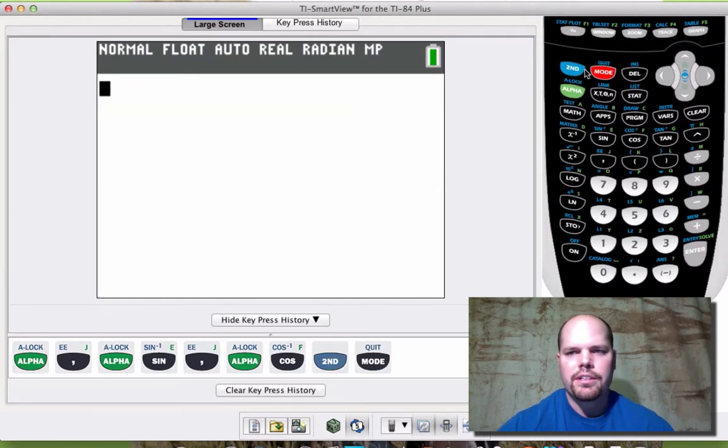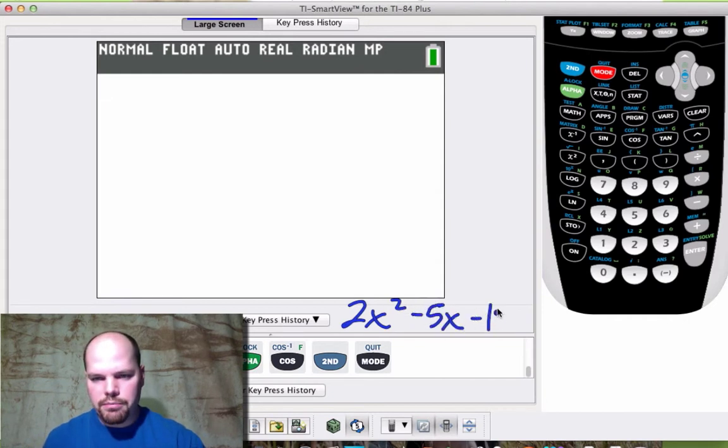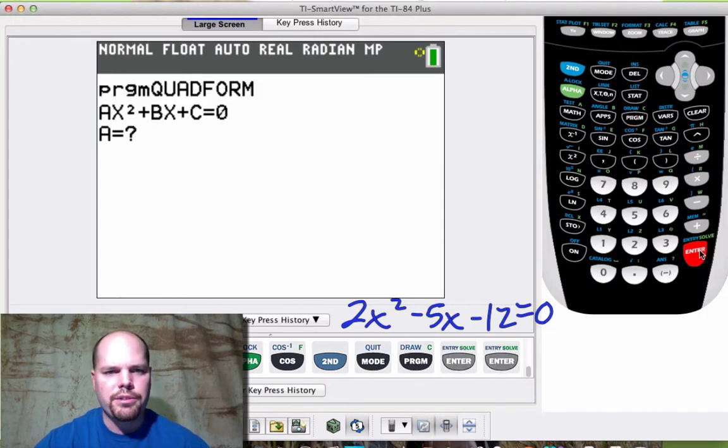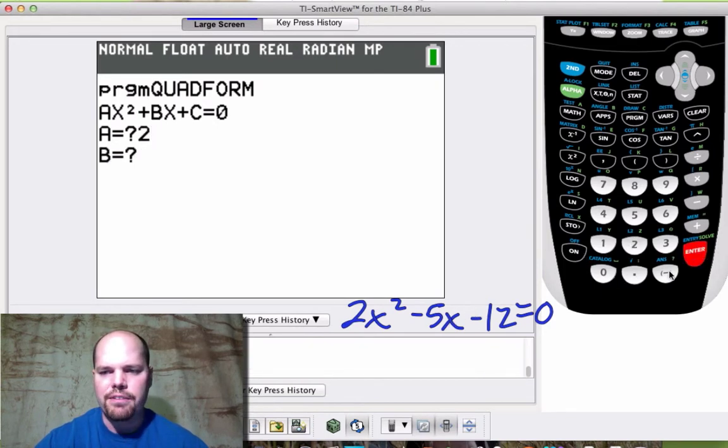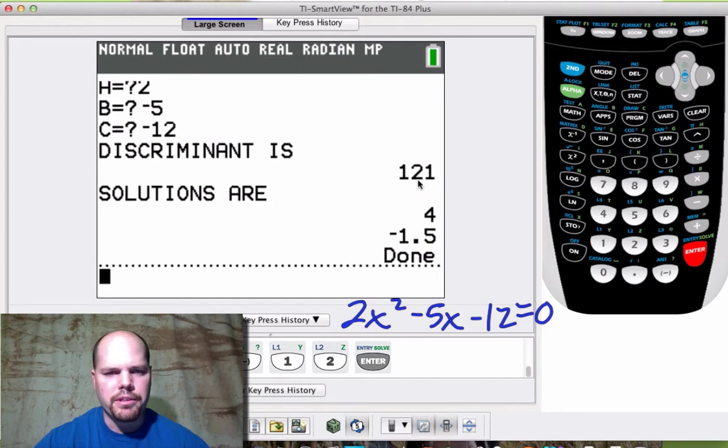Let's try it. So quit out. Second mode, quit out of there. And let's solve a quadratic of the form 2x² - 5x - 12 = 0. Let's use our quadratic program to solve this. So press program. Let's execute quadratic formula. Press enter. Now notice this little reminder here, ax² + bx + c = 0. Our equation is equal to zero. So the a is 2, enter in 2. B is -5. C is -12. Press enter. The discriminant is 121. That's a perfect square. So we get the solutions are 4 and -1.5.